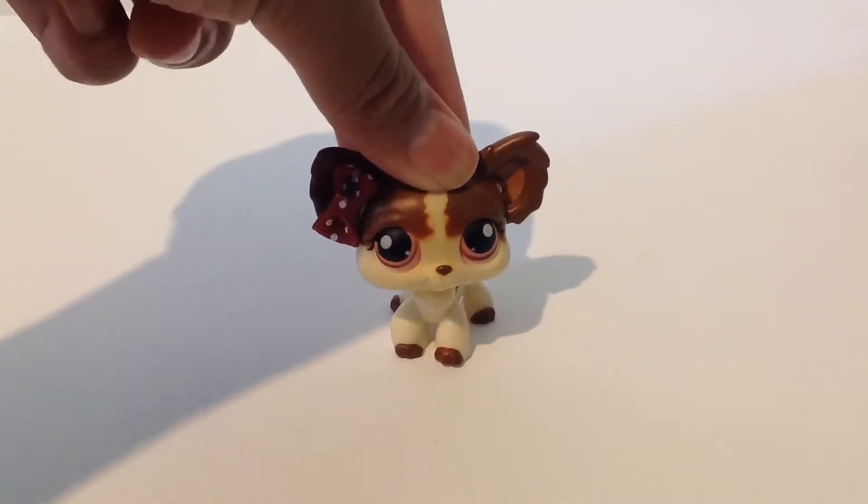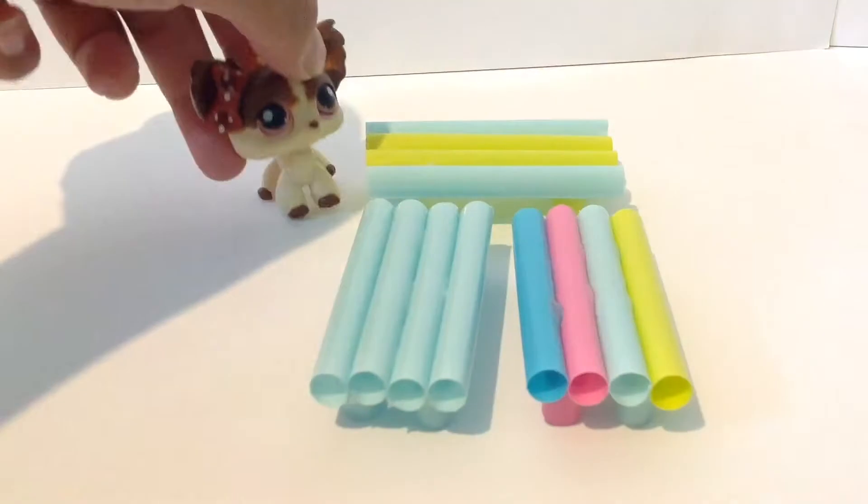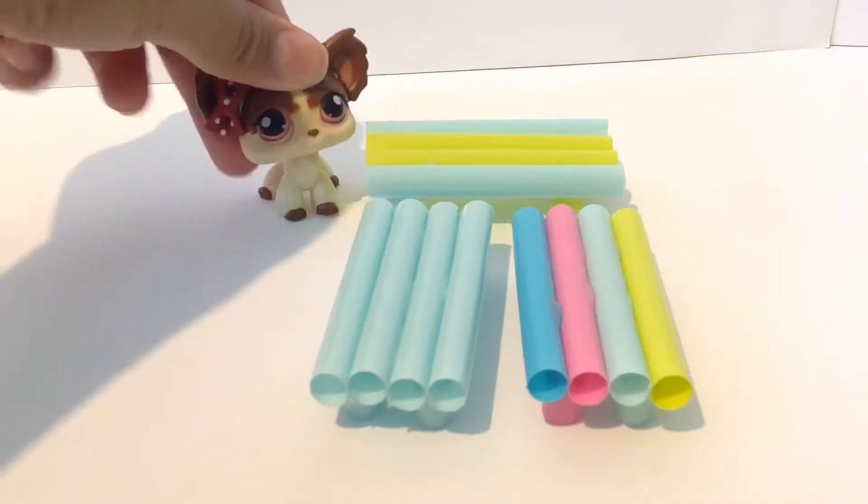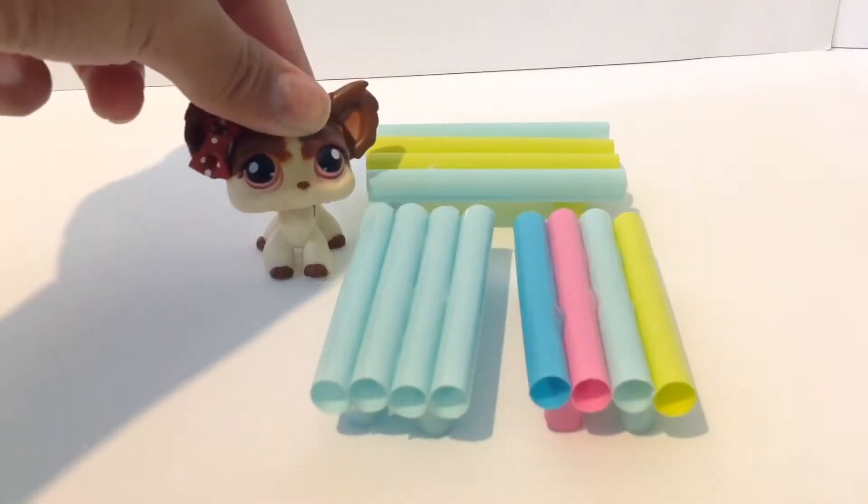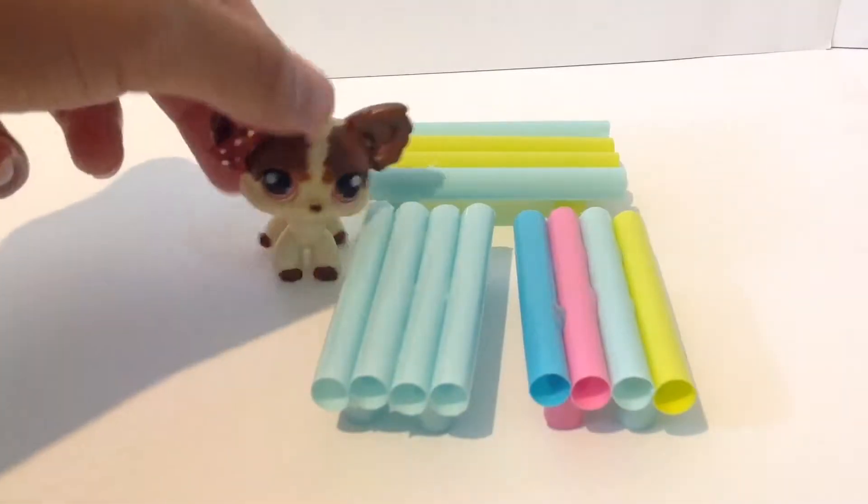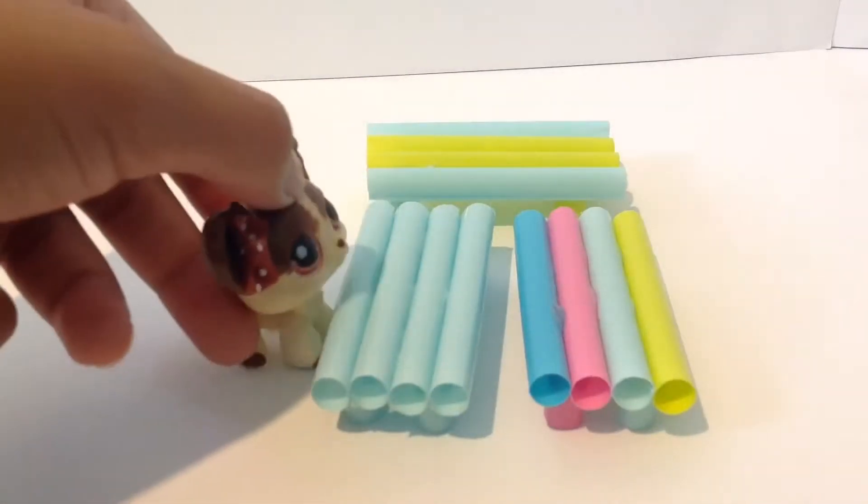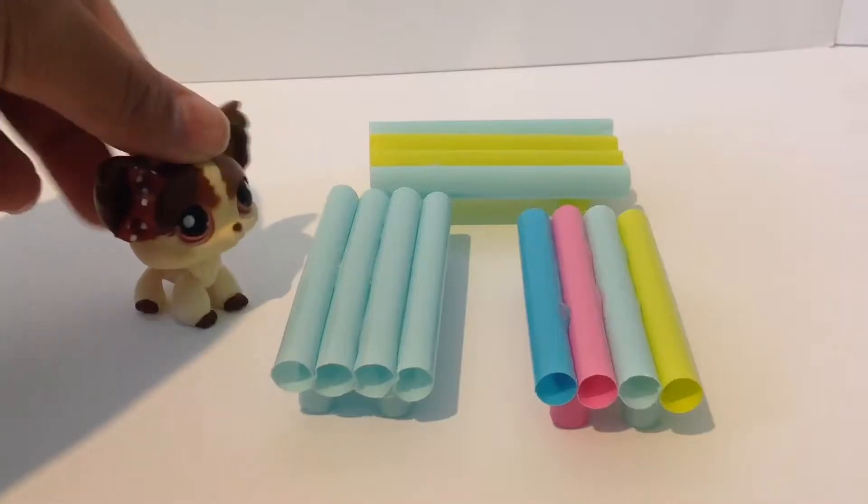Today I'm going to be making straw tables. This is what it looks like with hot glue on it. It's about 6.5 centimeters long and the height is about 1 centimeter.